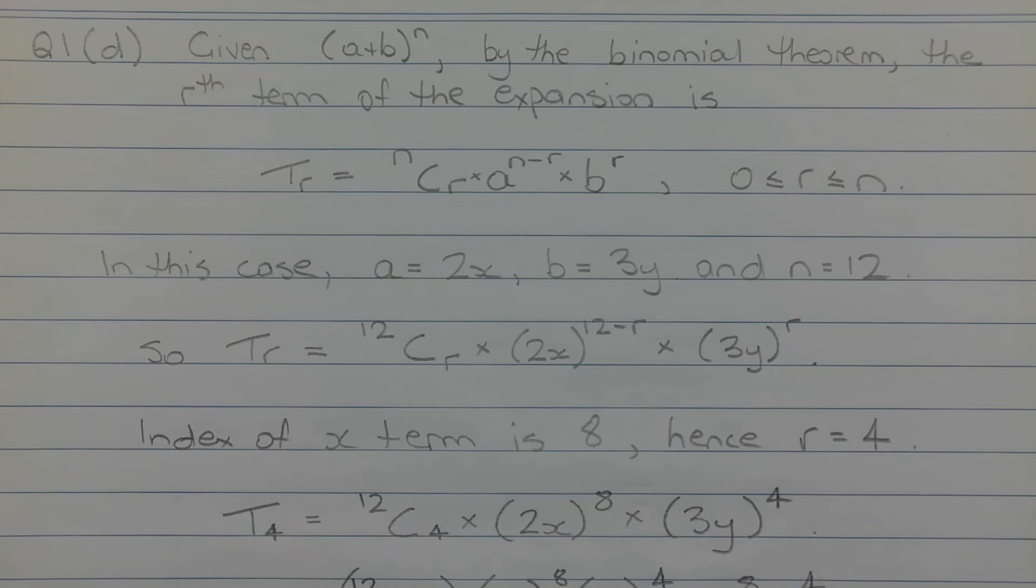We need to work out what the value of r is in this case, and we can do that by examining the index of the x term, which is 8. So we want 12 minus r to equal 8. Hence r is equal to 4.